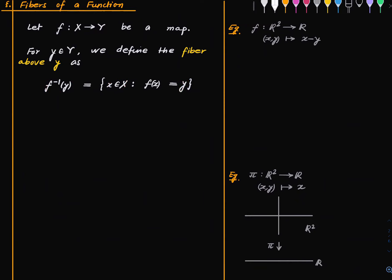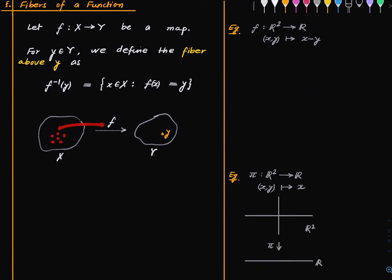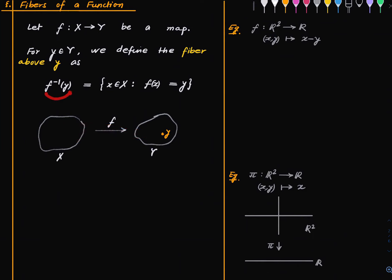So the fiber above y is all the points in X which map to y. To draw an abstract diagram: suppose this is our set X, this is the set Y, and we have a function which takes X to Y. Let's say the point y is here — the fiber above y is nothing but all those points in the domain which map to y. This may very well be the empty set because the point y may not be in the image of f at all. This could also be the entire set X, in which case the function f takes only one value, namely the value y.